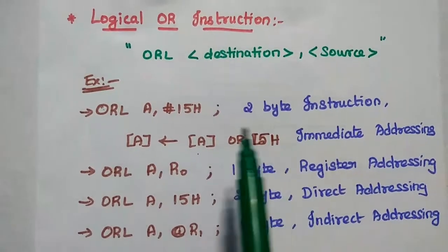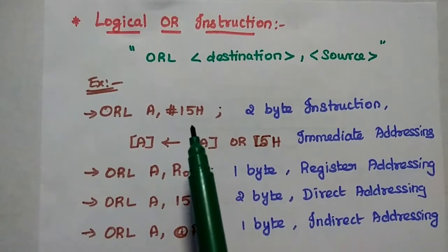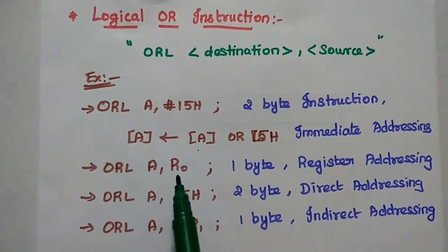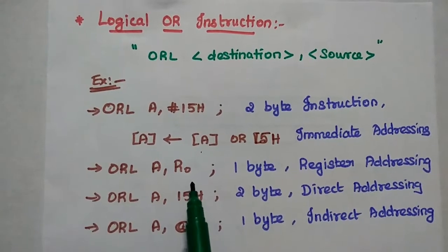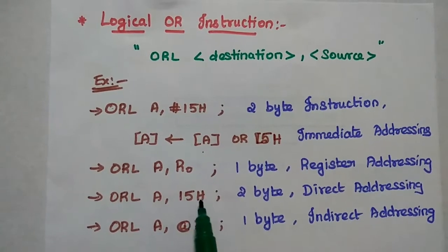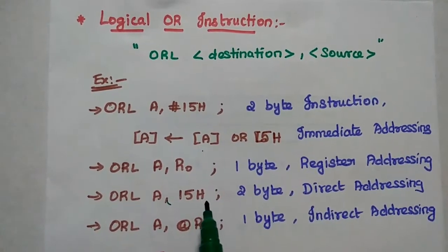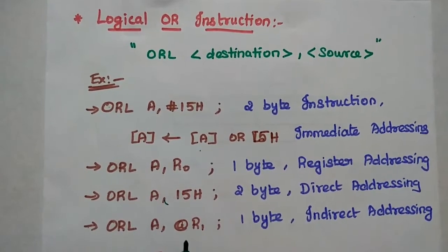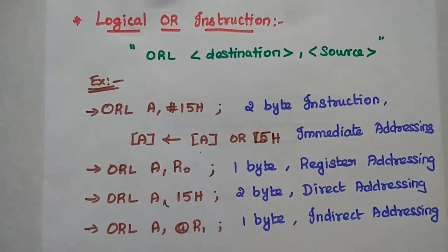ORL A, R0 is a 1-byte instruction using register addressing mode. ORL A, 15H — here 15H represents a direct memory address. Then ORL A, @R1 — the @ symbol represents indirect addressing mode.